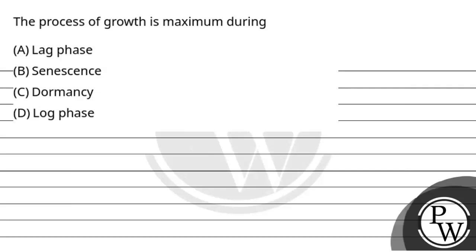Hello, so let's read the question. The question says the process of growth is maximum during: first option is lag phase, second option is senescence, third option is dormancy, fourth option is log phase.